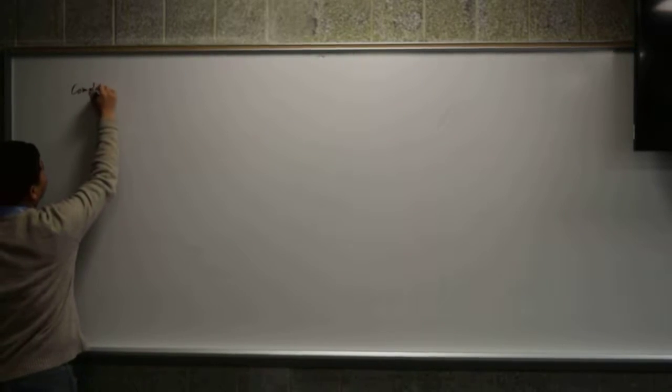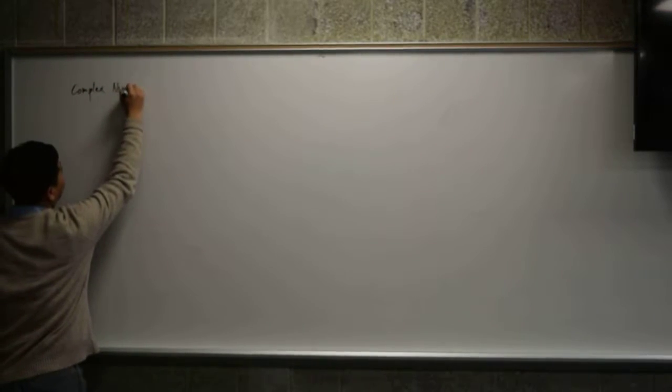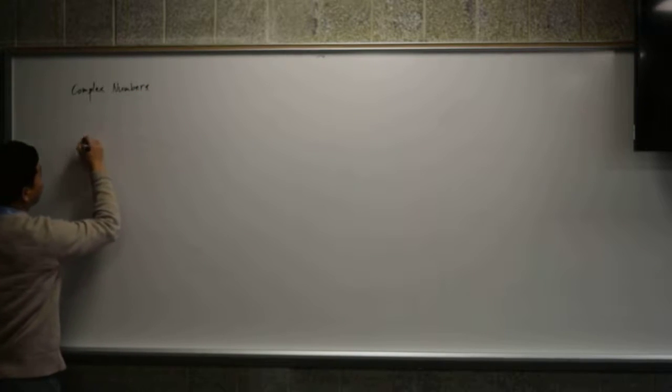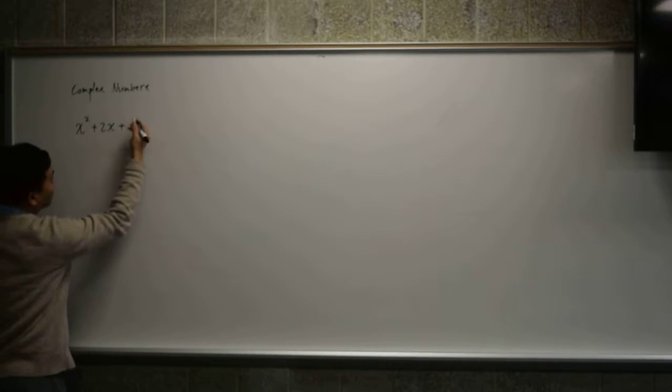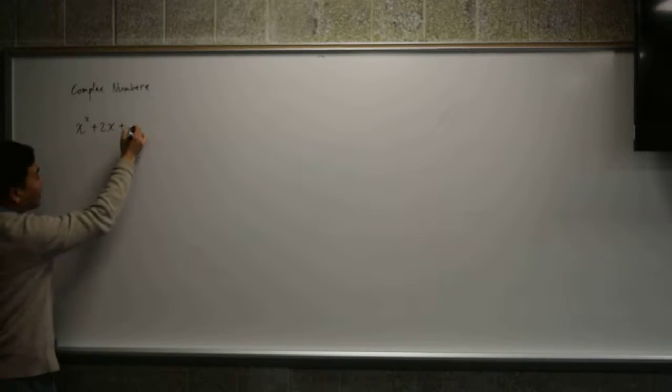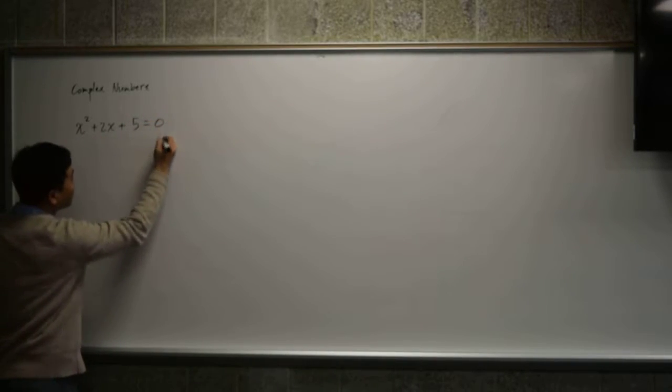There you go. Good. Alright, complex numbers. So if you have x² + 2x + 5 = 0,